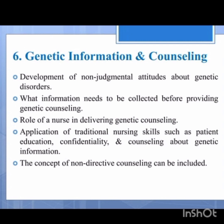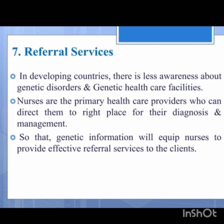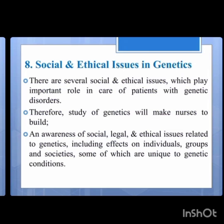We should give genetic information and counseling to patients at their level of understanding, or otherwise to family members. We should develop a non-judgmental attitude about genetic disorders — we should not judge that because both parents have genetic disorders, the child will definitely have them. We should not treat in a judgmental way; we should accept the patient as they are and give care. Referral service — critical cases should be referred to tertiary hospitals where effective treatment, counseling, and specialists are available.